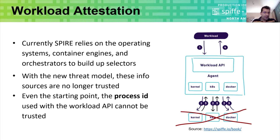On the workload attestation side, there are a few challenges. Regular workload attestation plugins rely on information from sources that are untrusted in this new threat model — Kubernetes, the kernel, the Docker engine are no longer trusted, so you cannot use those sources. Even the process ID used to start gathering information about workloads can be manipulated: you could get a process ID and try to attest it, but an attacker could reroute your query to a different process, resulting in giving an SVID to the wrong process.